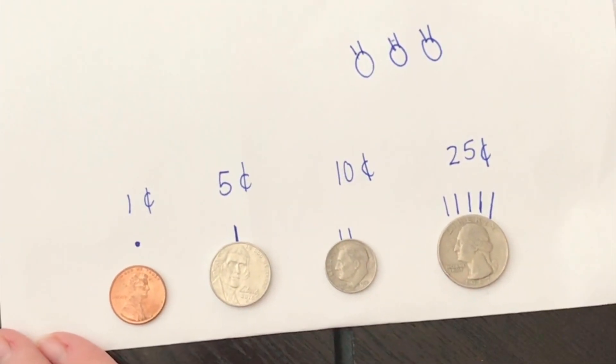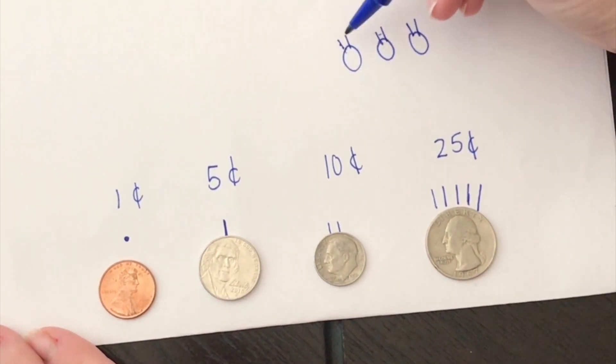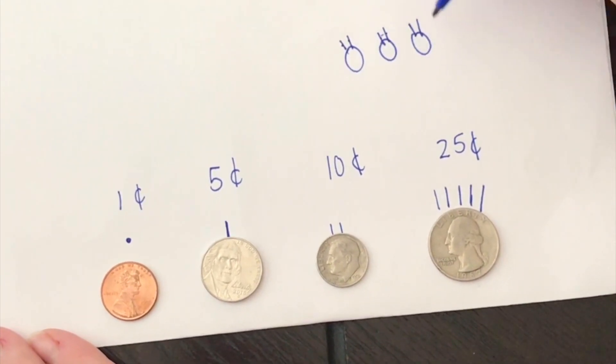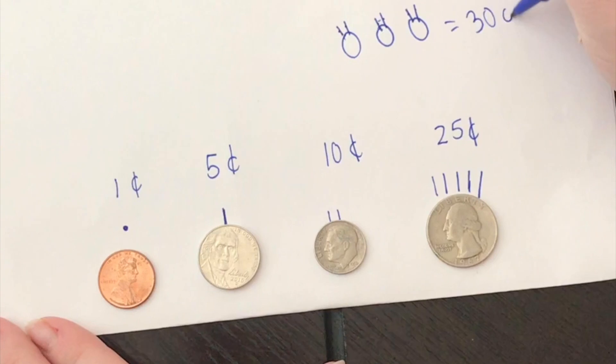Now I'm going to count by fives to see how much do I have total of all these dimes. Ready? Five, ten, fifteen, twenty, twenty-five, thirty. My total is thirty cents.